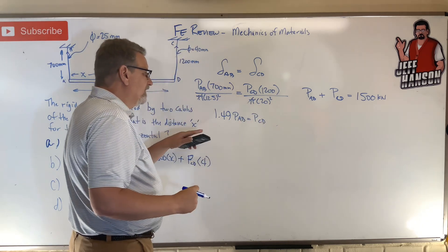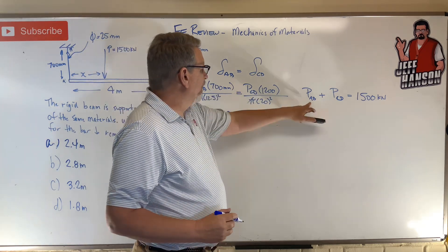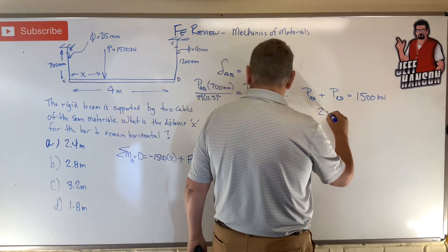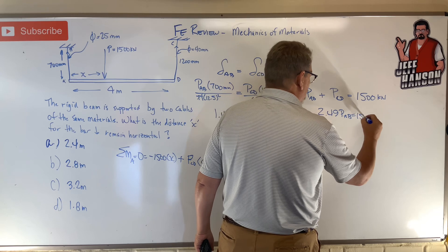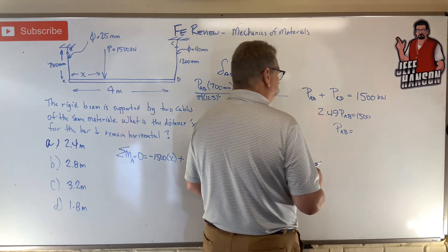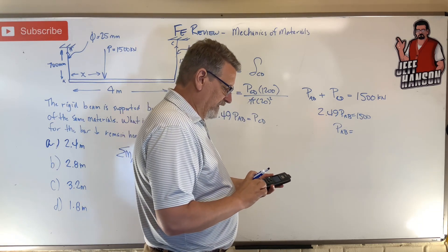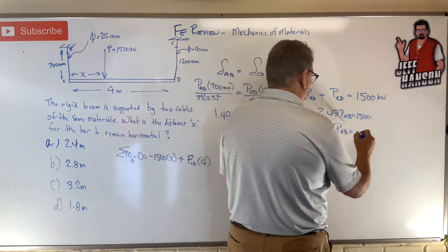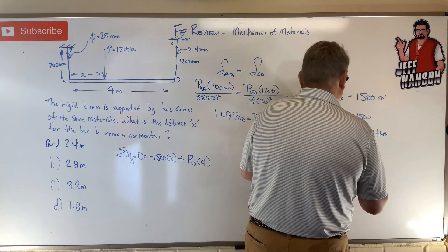Okay, let's plug that in for CD right there. If that's 1.49 plus one more, that's 2.49 P_AB equals 1500, so P_AB must be equal to 1500 divided by 2.49 equals 602.4. That's the force in cable P_AB.